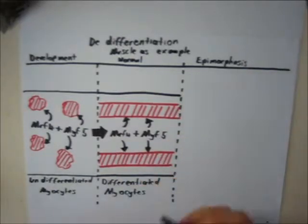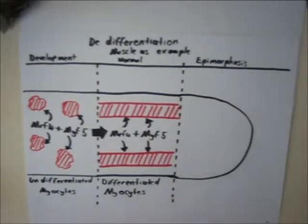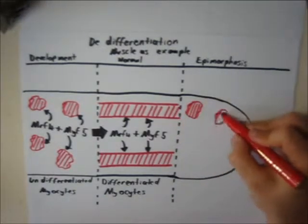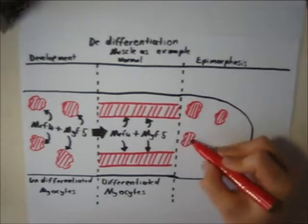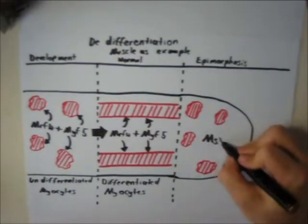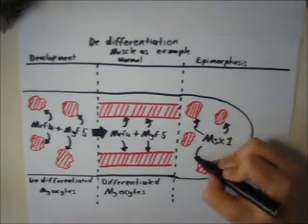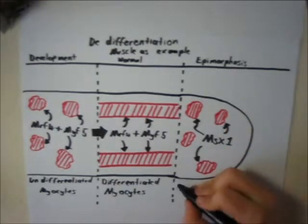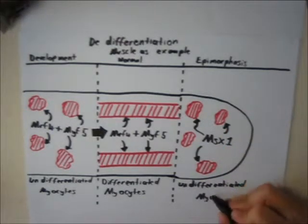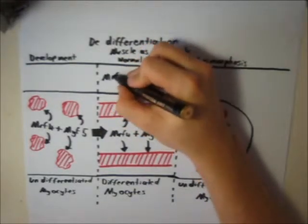During epimorphosis, in order for the cells to revert to their de-differentiated form, there is an upregulation of the MSX1 gene encoding a homeodomain transcription factor that is important in producing de-differentiated muscle cells from mature myocytes,